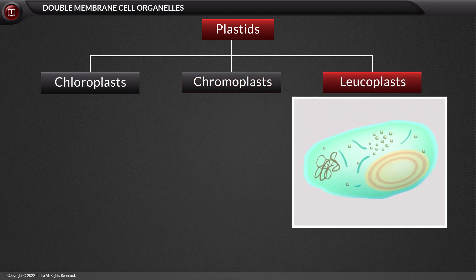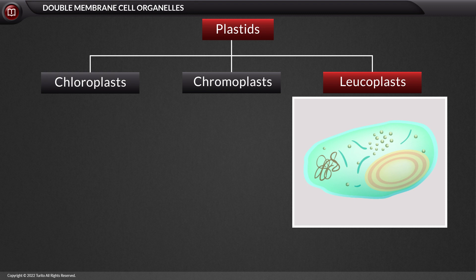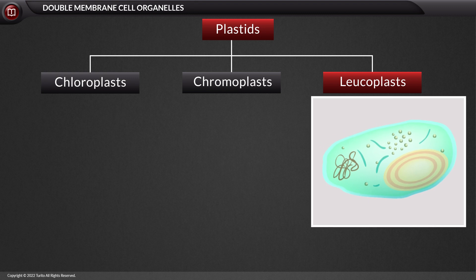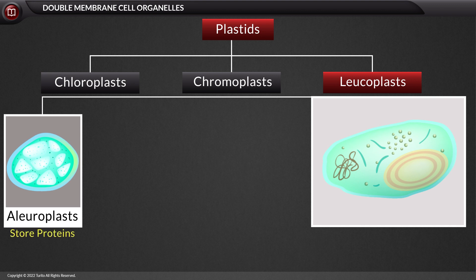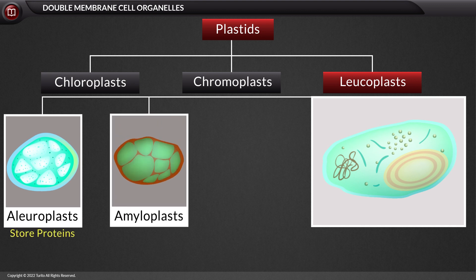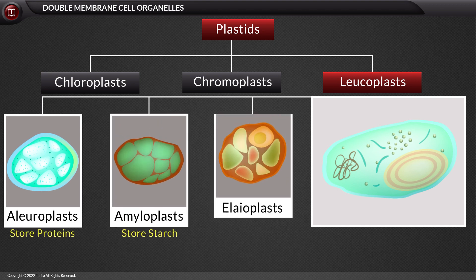Leukoplasts are the third type of plastids, devoid of pigments. These are specifically involved in storage. Leukoplasts can be further classified into three types, which include aleuroplasts storing proteins, amyloplasts storing starch, and elaioplasts storing fats.